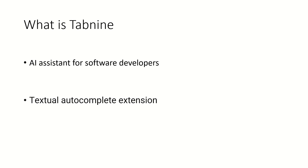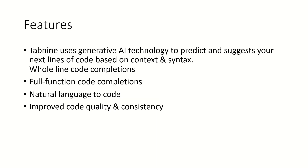Tab9 is an AI assistance tool for software developers. In core terms, you can also say it is a textual auto-complete extension. Tab9 uses generative AI technology to predict and suggest your next line of code based upon the context and syntax. If you brief something about that code, it will automatically generate the next line of code for you — including the whole line of code. We can say it is full function code completion and it uses natural language to code.